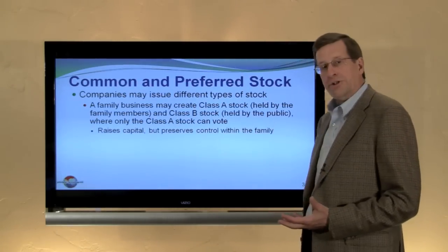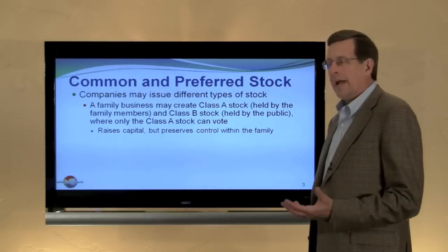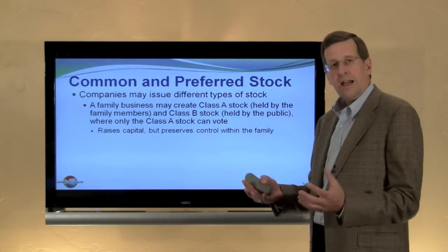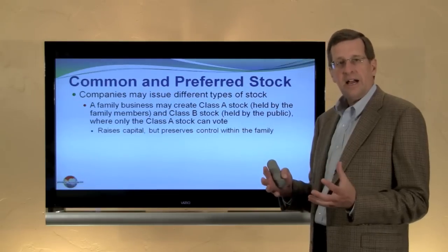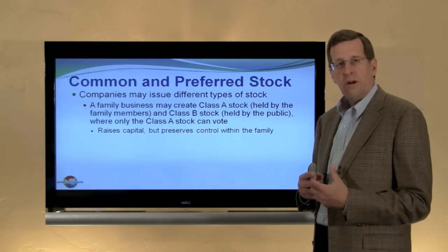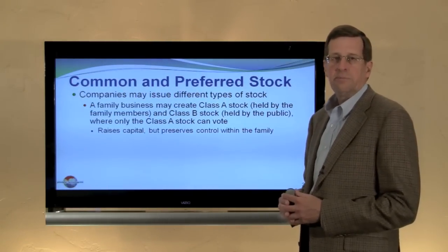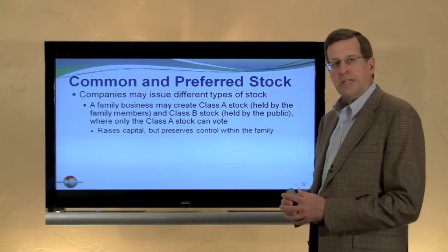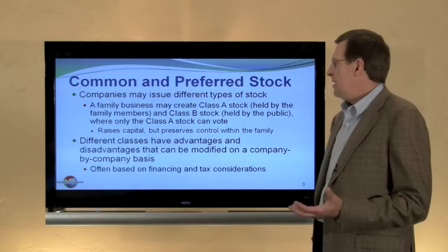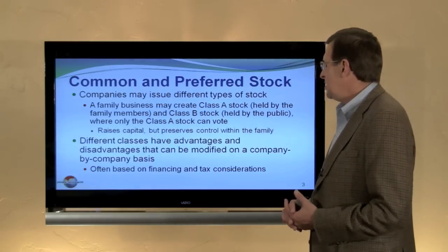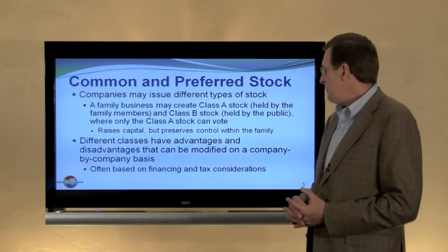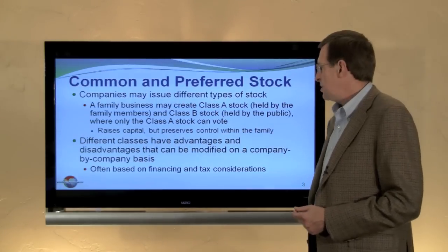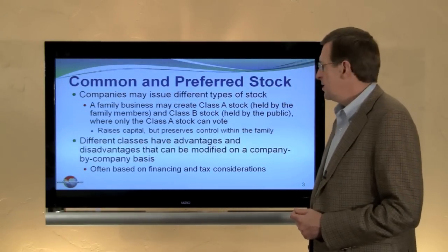Companies may issue different types of stock. For example, a family business may create a Class A and a Class B stock. They may retain the Class A stock, which has voting rights, and sell to the public the Class B stock, which does not have voting rights. They're able to share the ownership of the business but retain control. Different classes of stock have advantages and disadvantages that can be modified on a company-by-company basis. Oftentimes, tax and financing considerations drive this process.